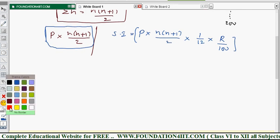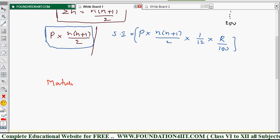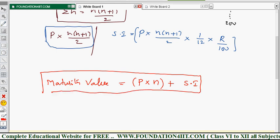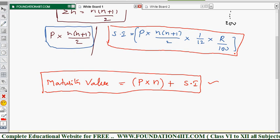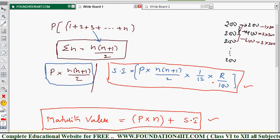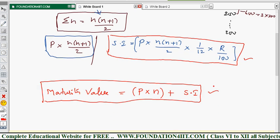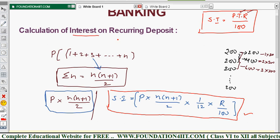To find the maturity value, we add the total deposit amount to the simple interest. The total deposit amount over n months at P rupees per month is P × n. Therefore, the maturity value formula is: Maturity Value = P×n + SI, where SI = P × n(n+1)/2 × 1/12 × r/100. These two formulas — simple interest and maturity value — are the only formulas needed in the banking chapter.